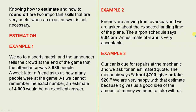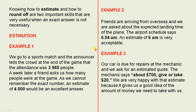Firstly, let's look at estimation. Example 1: We go to a sports match and the announcer tells the crowd at the end of the game that the attendance was 3,985 people. A week later a friend asks us how many people were at the game. As we cannot remember the exact number, an estimate of 4,000 would be an excellent answer.